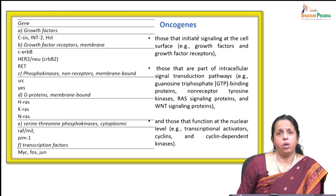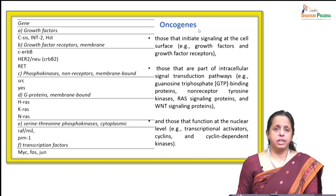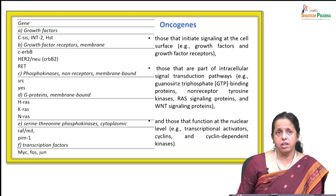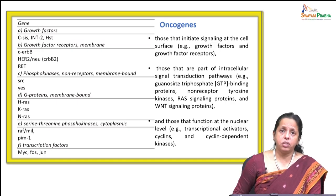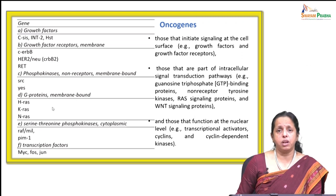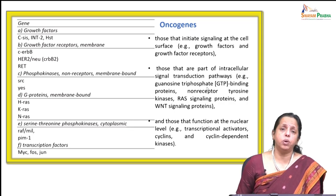Oncogenes are those that initiate signalling at the cell surface — for example, growth factor receptors — and those that are part of intracellular signal transduction pathways, and those that function at the nuclear level. In this table, we can clearly see different growth factors, growth factor receptors such as HER2, G proteins and membrane-bound proteins such as HRAS, KRAS, NRAS, and phosphokinases. Transcription factors like MYC are all important oncogenes which can be transformed upon a single base pair mutation from a proto-oncogene.